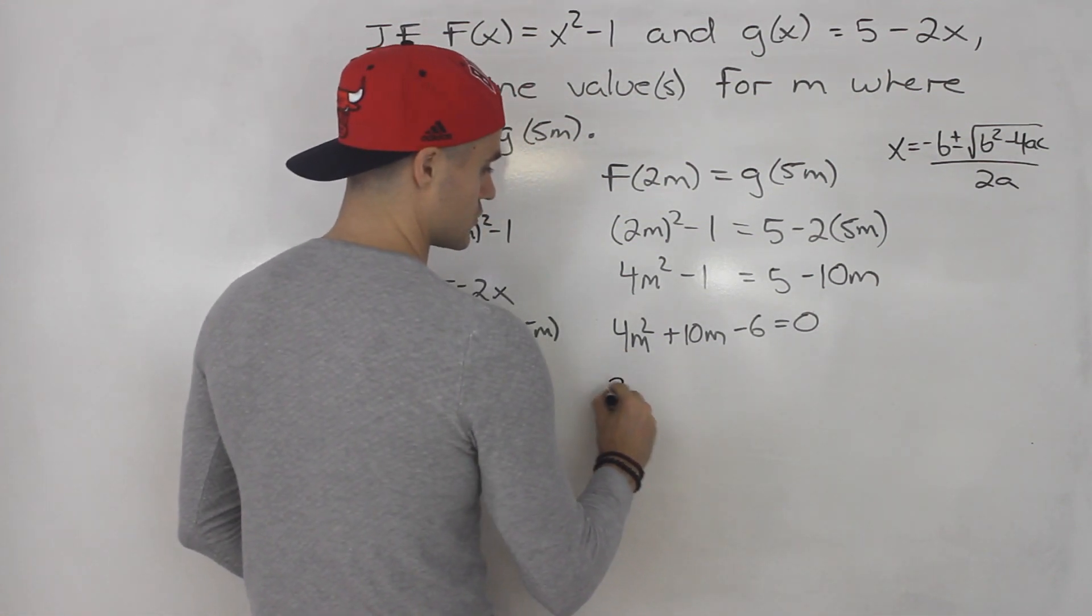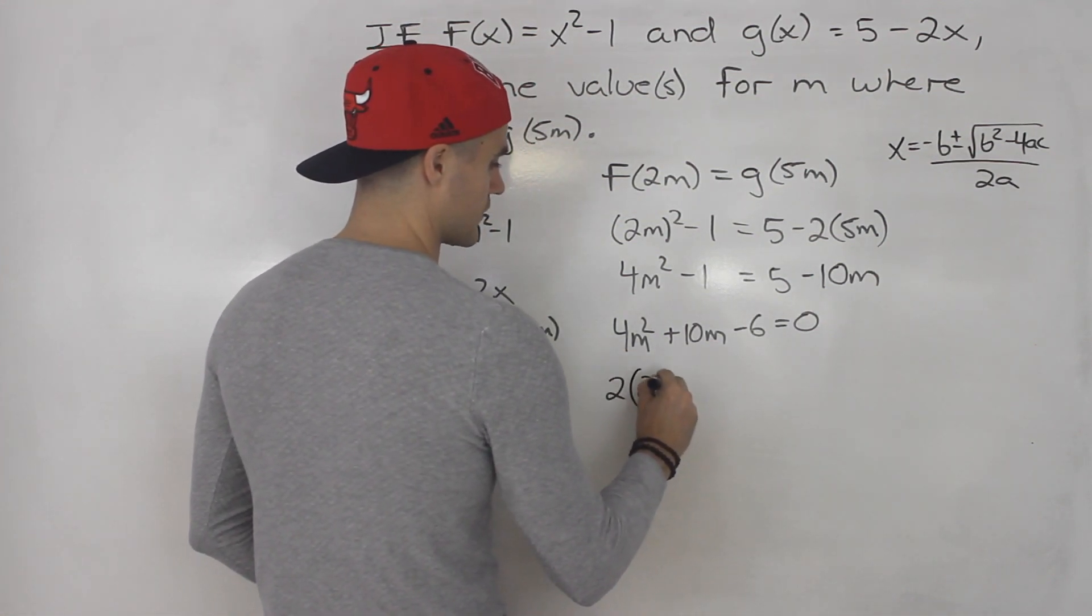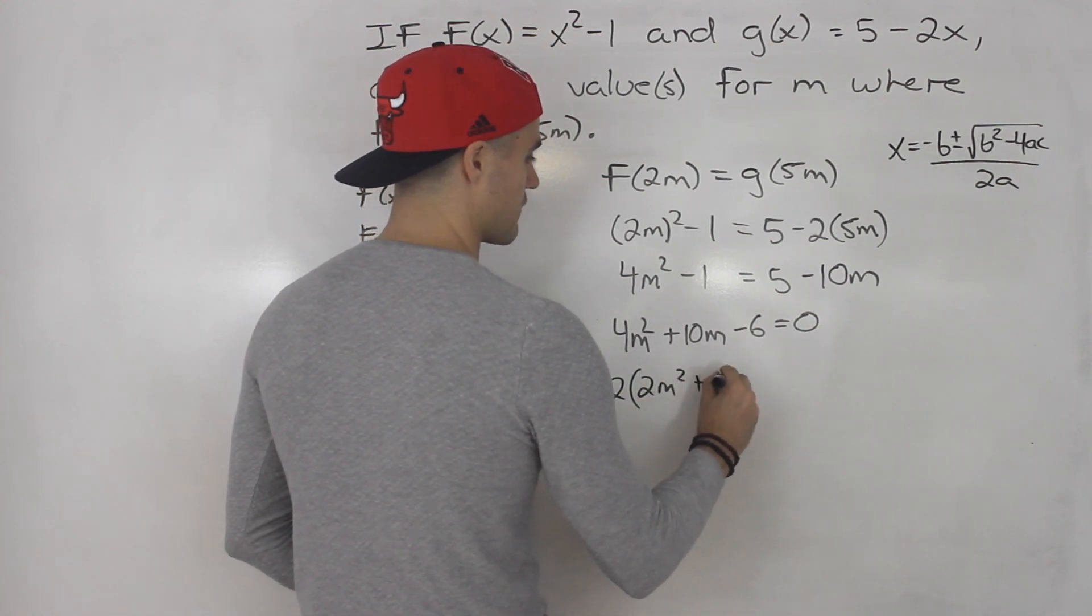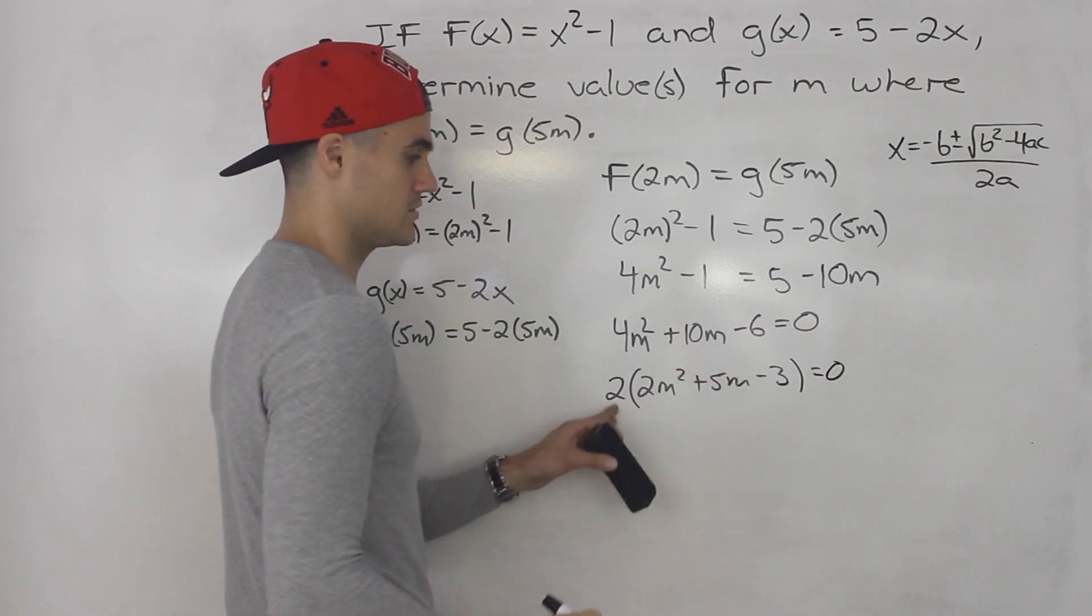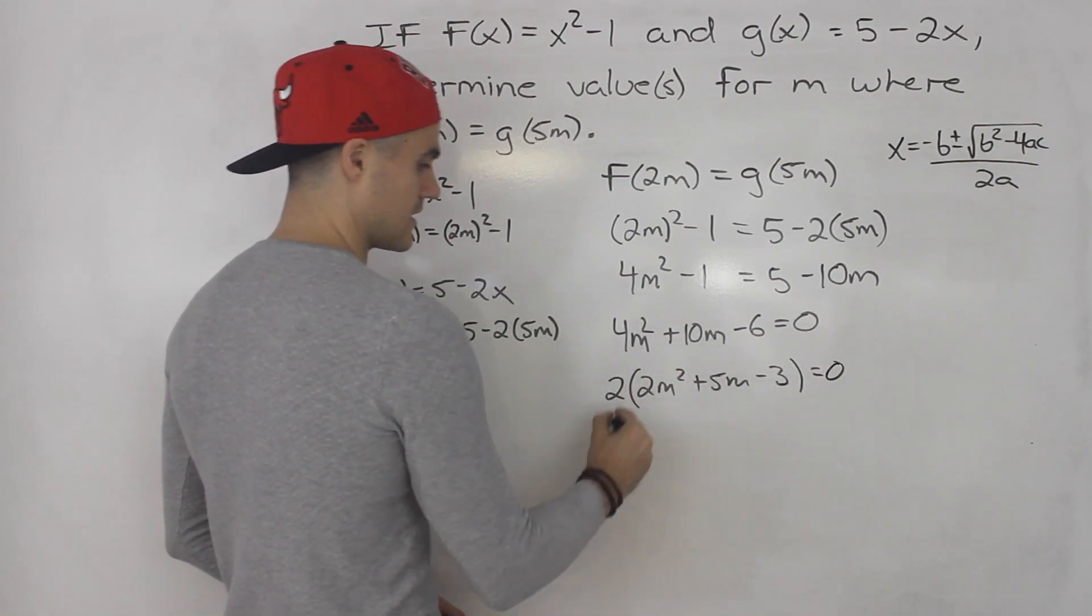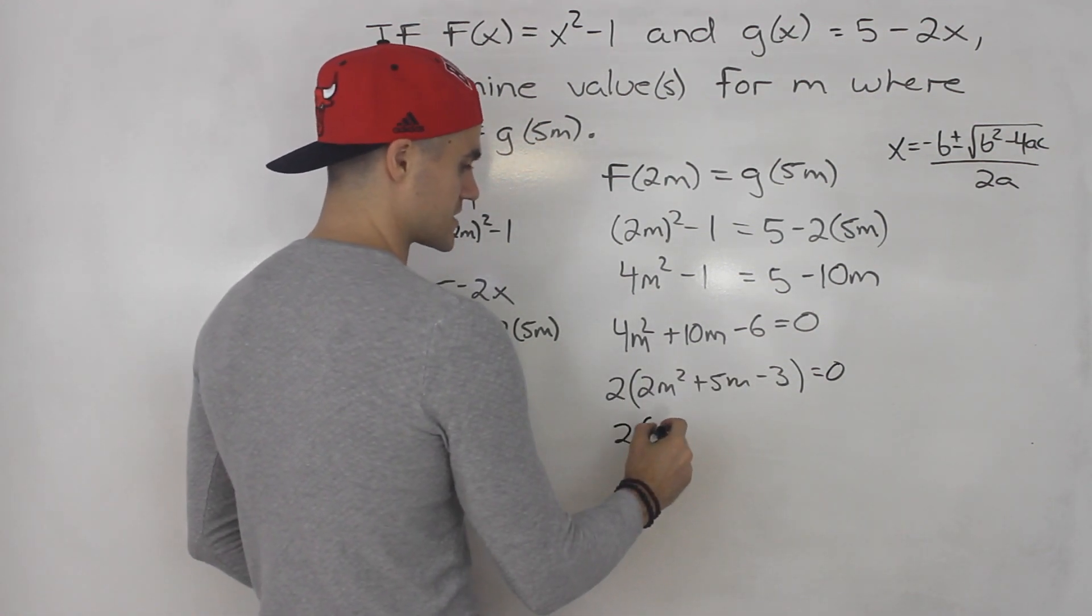You can take out a 2 from everything. You'd be left with 2m² + 5m - 3. If I'm taking out a 2, I'm just dividing everything by 2.